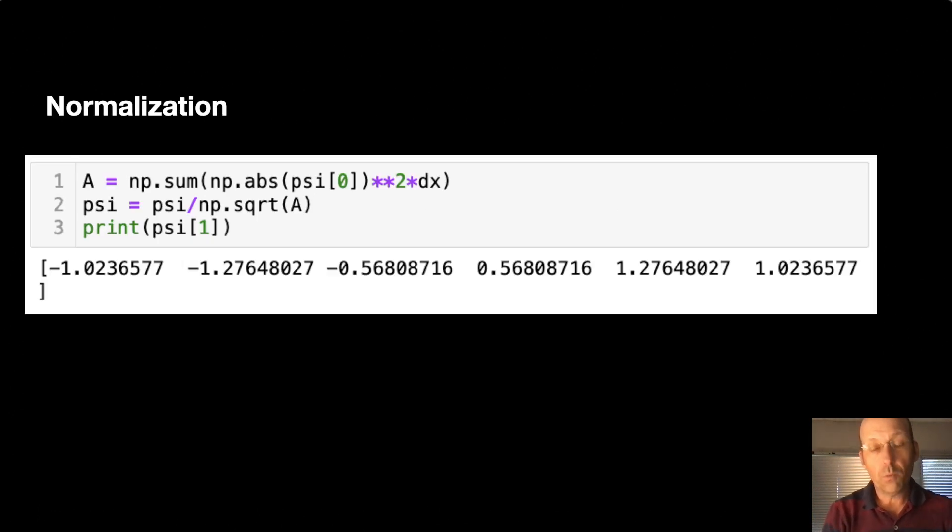Normalization. When you create an initial wave function, when you create eigenvalues, they have to be normalized. So to normalize, we need to integrate the integral from negative infinity to infinity, psi star psi, dx. And again, I'm not positive this is correct, but I think it's correct. And if you think hard enough that it's correct, that's good enough, right?